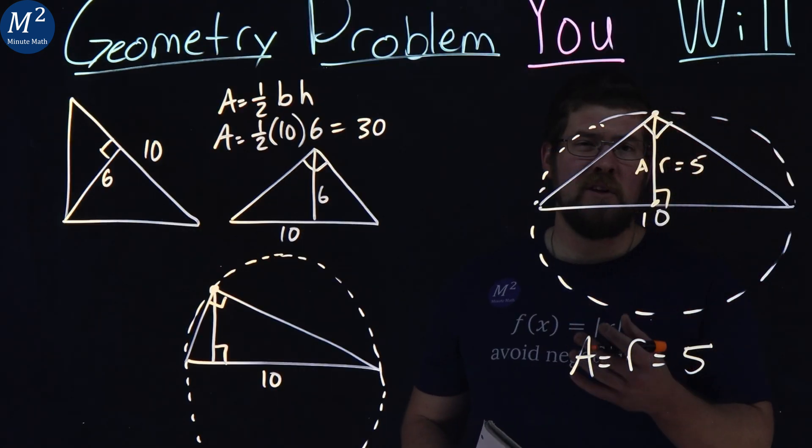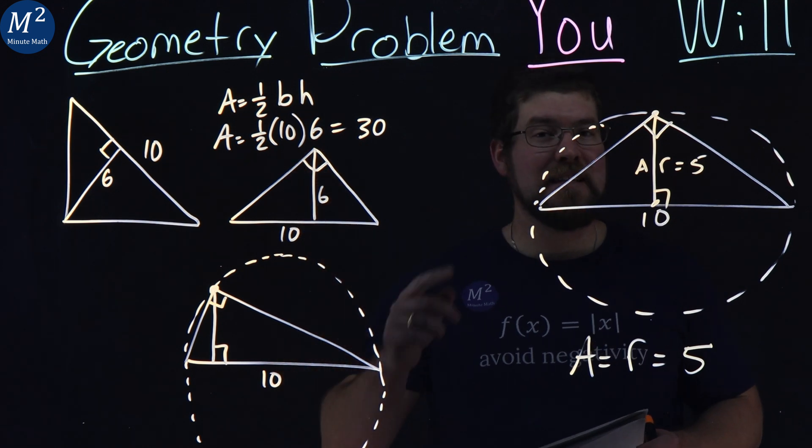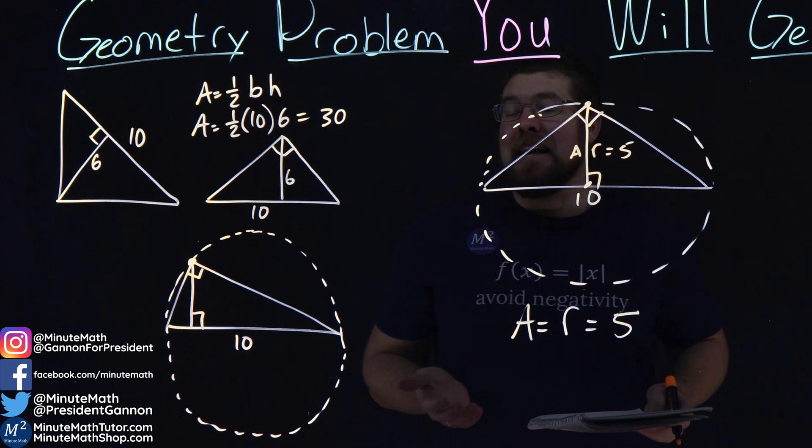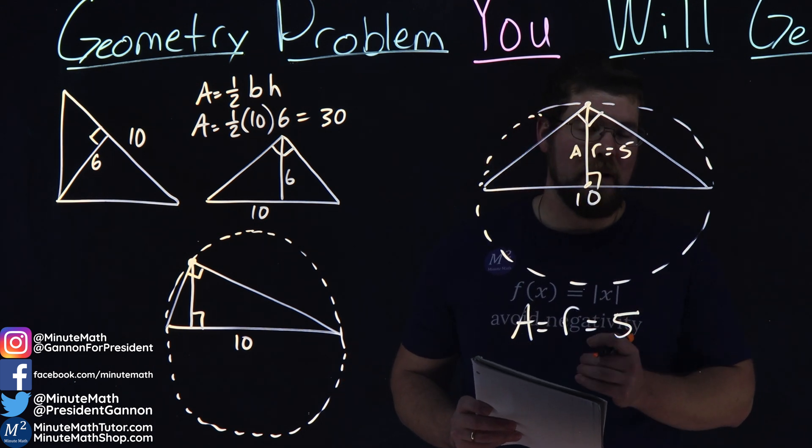So our problem from the beginning was flawed. We can't actually get an answer because the altitude being 6 does not exist. So if you had any answer, really, your answer was wrong. And the real answer is, this problem is impossible.